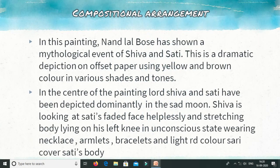Let's move on to the compositional arrangement. You have to write something different here — don't repeat the subject matter. In this painting, artist Nandlal Bose has shown a mythological event of Shiva and Sati. This is a dramatic depiction on offset paper — a dull paper — in which only yellow and brown colors are used in different shades. This means the painting is monochromatic, meaning one color is used in various shades, dark and light.